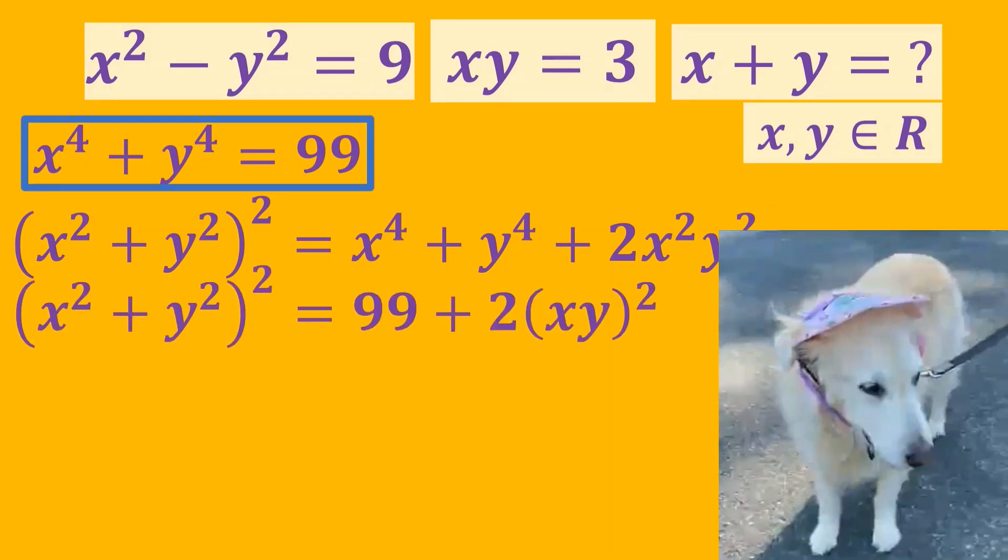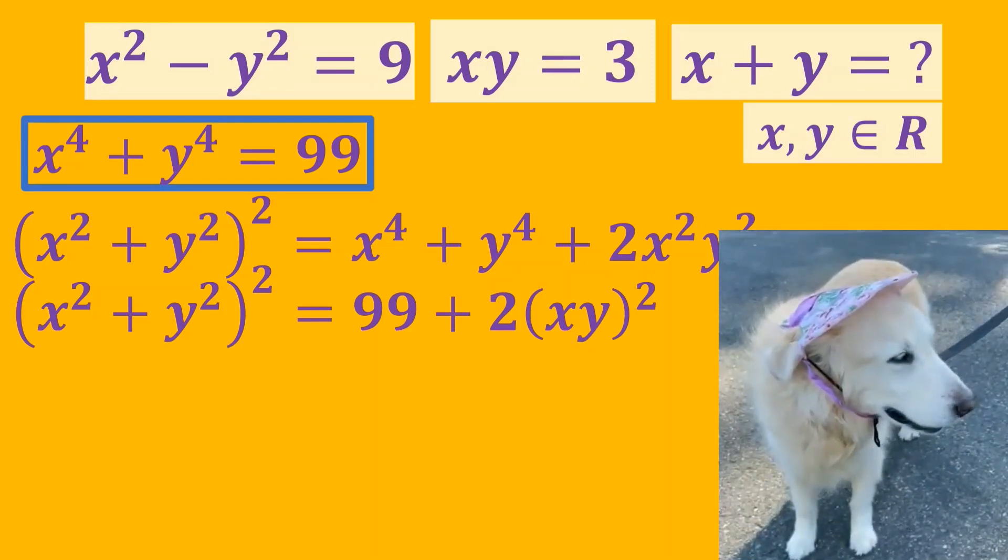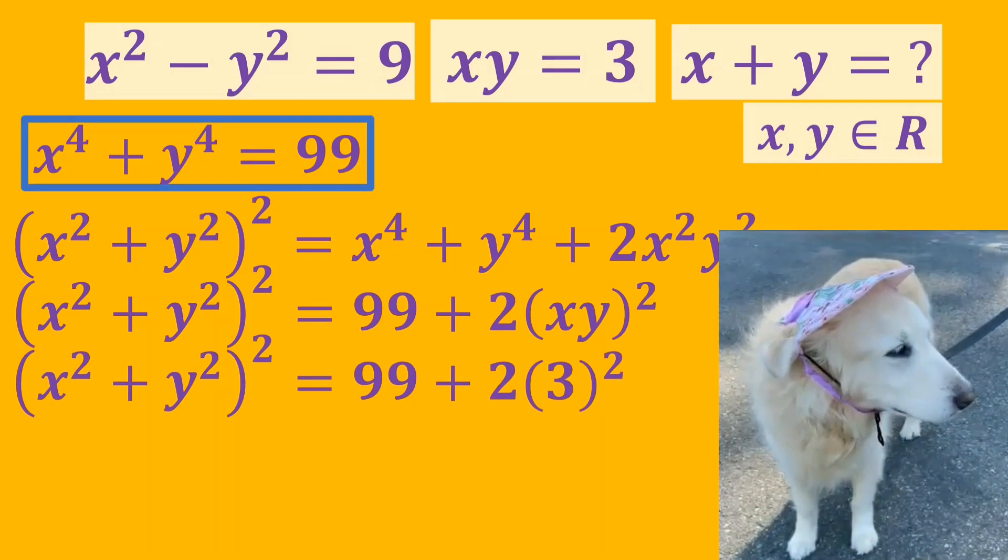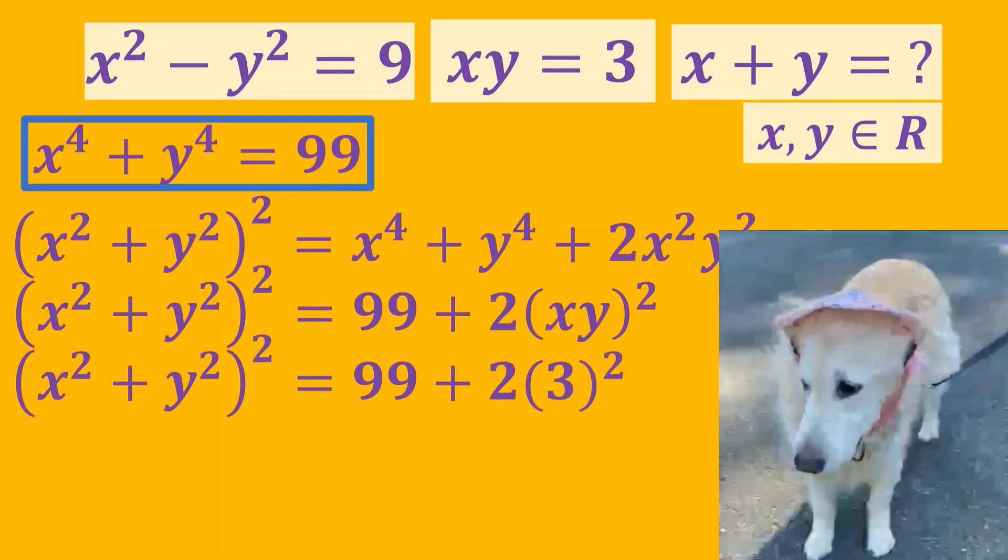And again, we can replace x squared times y squared with xy squared. We write 3 instead of xy squared.